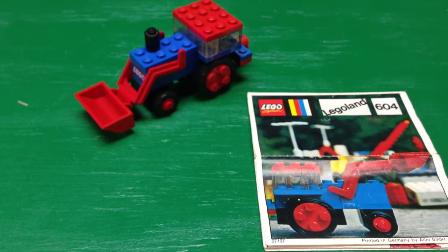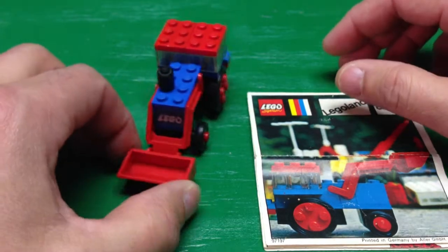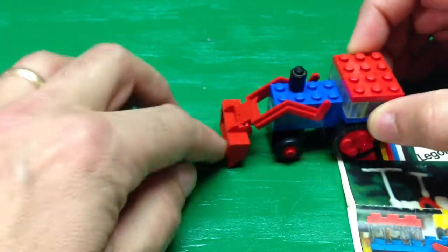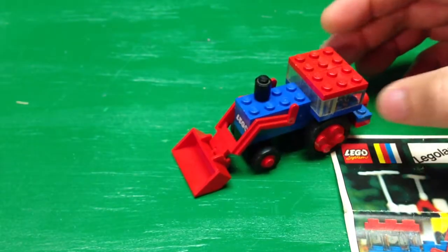It's only 28 pieces. It's one of the small construction type sets, and there's not much to it. It has the front-end loader type thing. It's your excavator where you can pretend like you're working in the dirt.